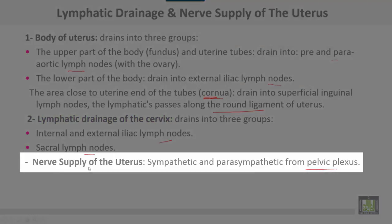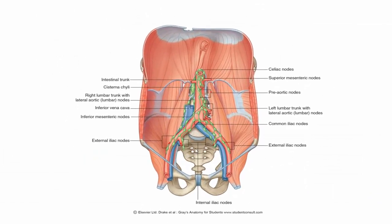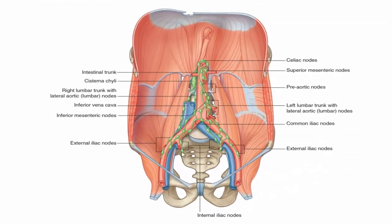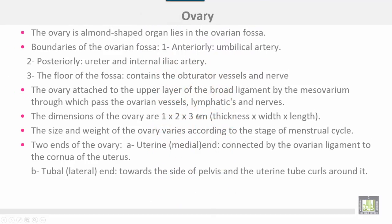Nerve supply of the uterus: sympathetic and parasympathetic from the pelvic plexus. The lymphatic drainage groups include the internal iliac, external iliac, common iliac, para-aortic, and pre-aortic lymph nodes. The ovary is an almond-shaped organ lying in the ovarian fossa.